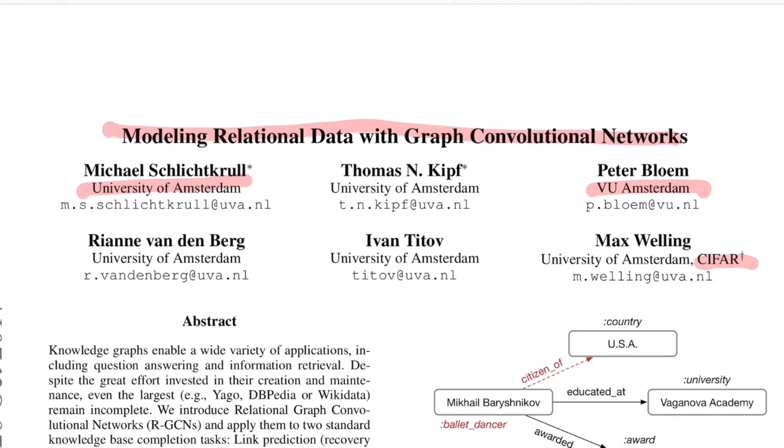So if you can recall, GCN, GraphSage and all of these papers talked about learning representation of different components of the graphs such as nodes and edges for graphs that have single type of nodes and single types of edges. Whereas in this paper, authors work toward generalizing it to graphs that have multiple types of nodes and multiple types of edges or relations.